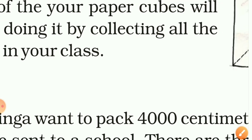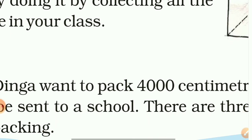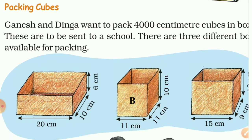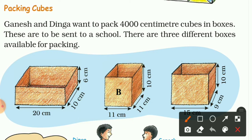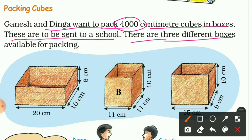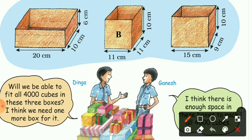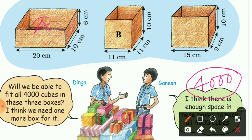So we have used two methods and both give the same answer. You can use either method to solve such problems. Now the next topic is 'Packing Cubes.' Ganesh and Dinga want to pack 4000 cubic centimetre cubes into boxes to be sent to a school. There are three different boxes available: Box A, Box B, and Box C, with their dimensions given.